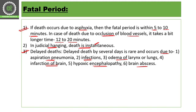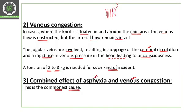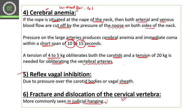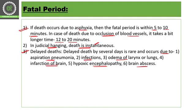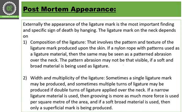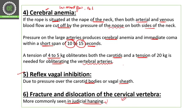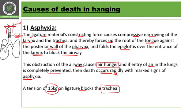To summarize the fatal period: judicial hanging is very quick and instant. Asphyxia and venous congestion together take a maximum of around 20 minutes, while asphyxia alone takes 5 to 10 minutes. In the next class we will cover post-mortem appearance in cases of hanging.